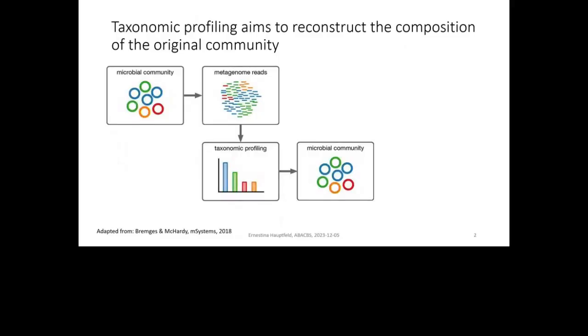So we extract the DNA, we sequence everything, and usually what we get out is millions, a few million short reads of 150 to 250 nucleotides in length. And then when I do taxonomic profiling, what I'm trying to do is I'm trying to reconstruct what was originally in the sample. So I want to see which organisms were there and how much of it. So then what I get out is essentially a text file that tells me which organisms are in the sample and then what fraction of the DNA belongs to each of them.